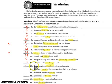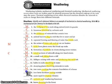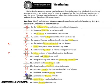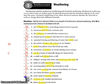Tree roots cracking would be mechanical. Iron lawn furniture rusting is chemical. More rapid weathering in tropical areas where it's warm and wet would be chemical. Carbonic acid weathering limestone — acid — is chemical. And leaves decaying or rotting is chemical.